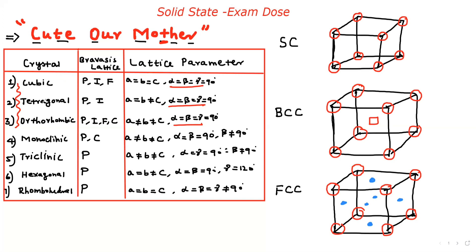In the cube, all three angle marks are the same — alpha, beta, gamma equal 90. For the cubic system, a = b = c. For tetragonal, a = b, not equal to c. For orthorhombic, a ≠ b ≠ c. Remember these three very easily.